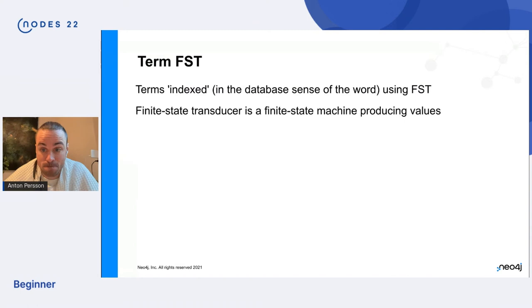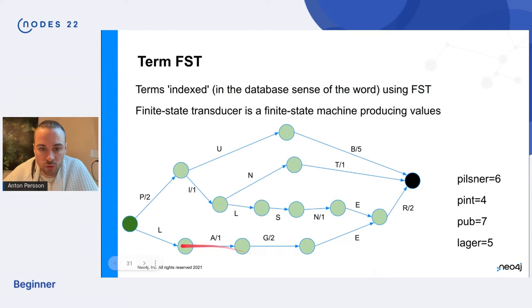So there is another part of the scene here, which is called the finite state transducer, which basically is the structure in which the terms are indexed internally in Lucene. So how do you find the term you're looking for? And this is what it looks like. So if there is a way for you to take, to go from the green node to the left, to the black node to the right, and you find your word that you're looking for along the way here.